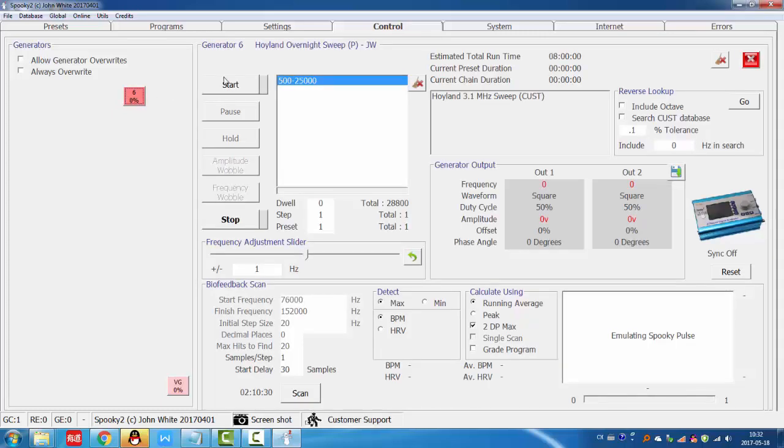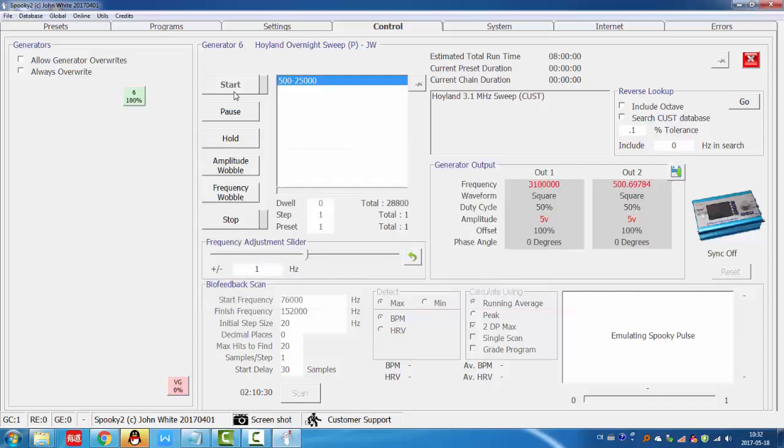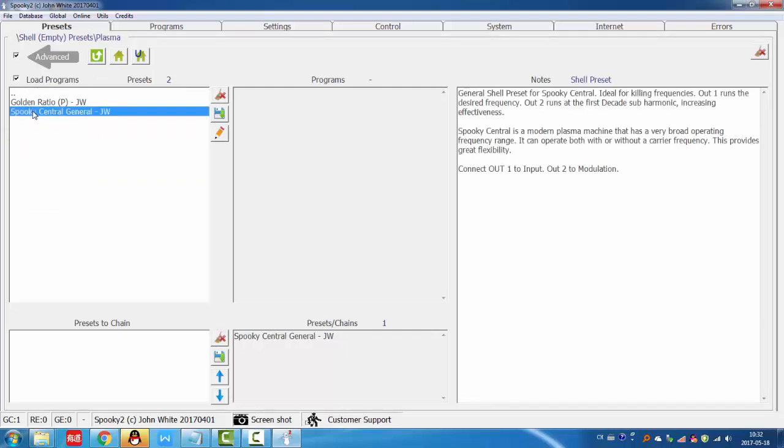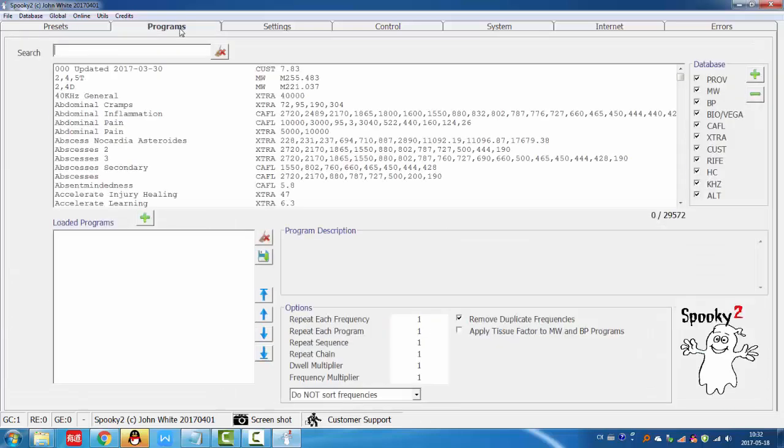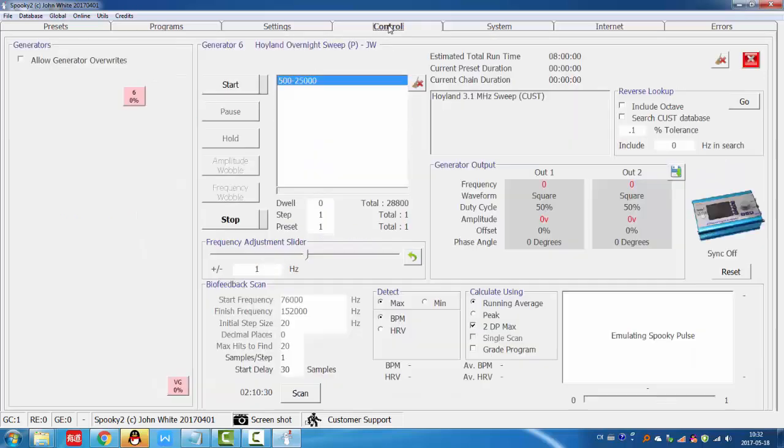If you want to choose programs by yourself, you can use shell preset. Go to shell empty presets in plasma. You can use golden ratio or spooky central general. Then choose the program you want, go to control tab, tick the generator overrides, open the generator and click start.